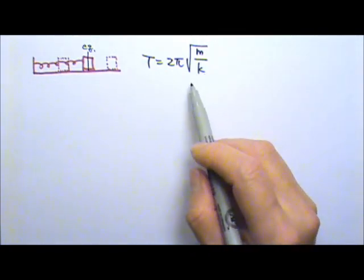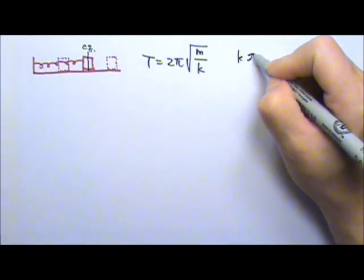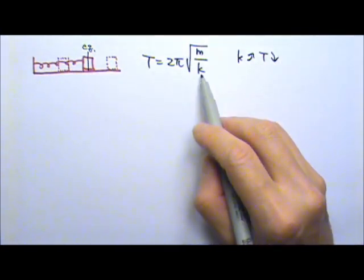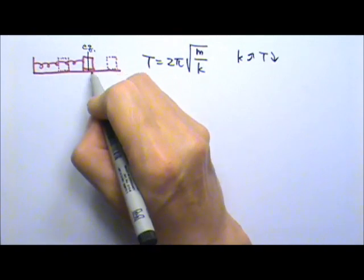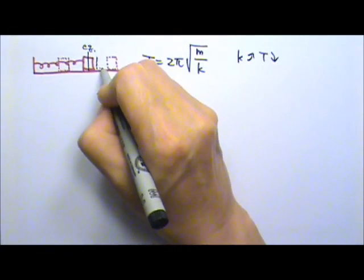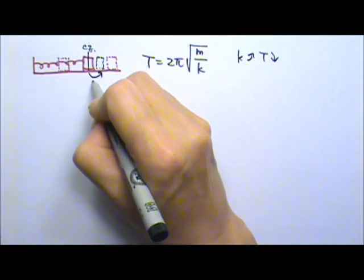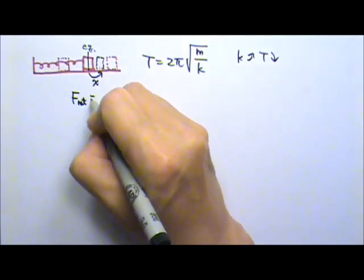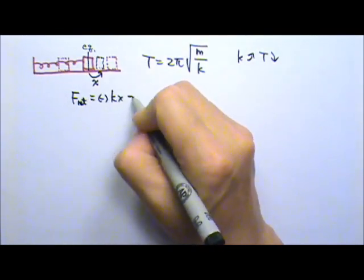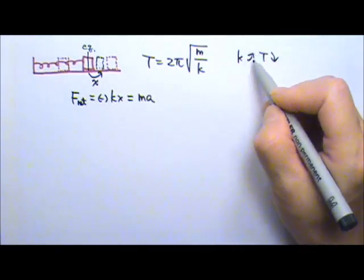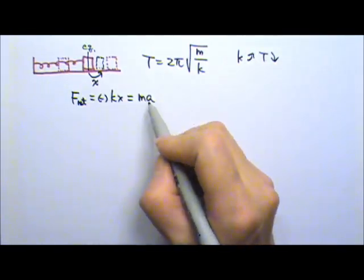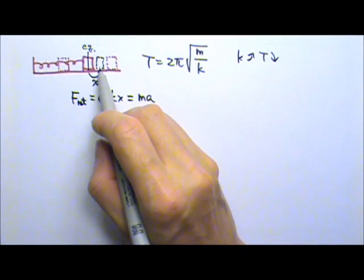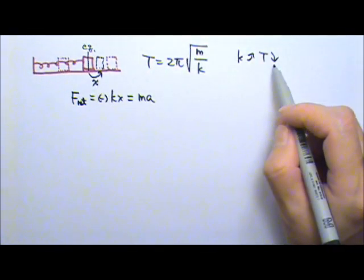We can look at this qualitatively. For example, the larger the spring constant, the shorter the period. If this box is oscillating, at the moment when the box is at a distance x from the equilibrium, the net force on the box equals negative kx, which equals ma. The larger the k means the larger the force. For the same mass, that means the larger the acceleration, so the box gets to move faster — it makes sense for the period to be shorter.